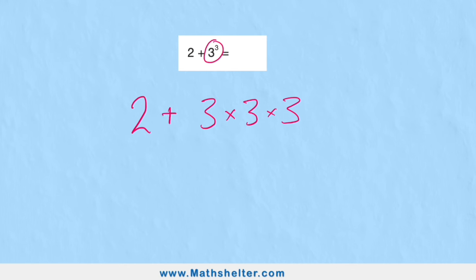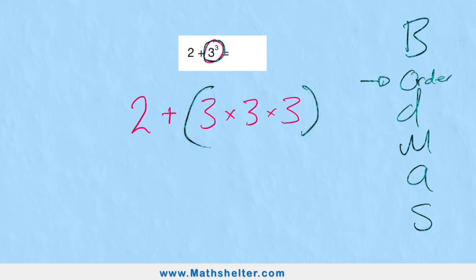If we look back at our BODMAS, we can see O means order, which is what we call these powers here. This is the first part we must solve before we add the two to it. Three times three is nine, nine times three is 27. Now I can put my two plus, two plus 27 equals 29.